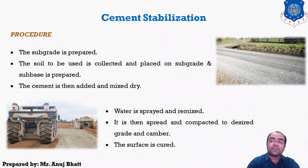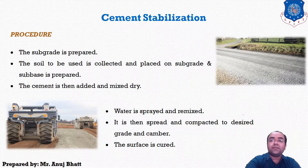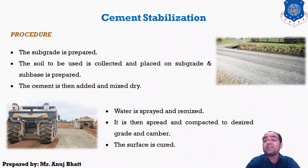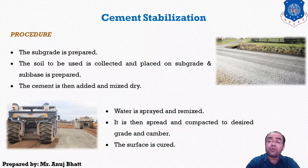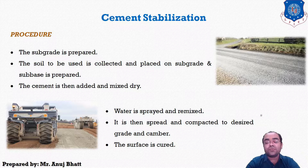The moisture added for adequate compaction is more than enough for the hydration of the cement. There are various useful additives which improve the property of the soil cement, such as lime for clay soil, sodium hydroxide, sodium carbonate, and calcium chloride — these are additives that can be used in soil cement.